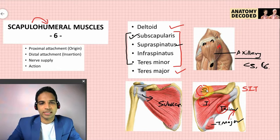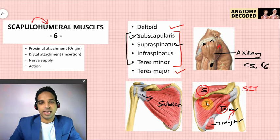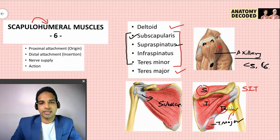Supraspinatus initiates abduction from 0 to 15 degrees. Infraspinatus and teres minor help in lateral rotation at the shoulder joint. Teres major, since it passes anteriorly, causes medial rotation of the shoulder joint when it contracts.